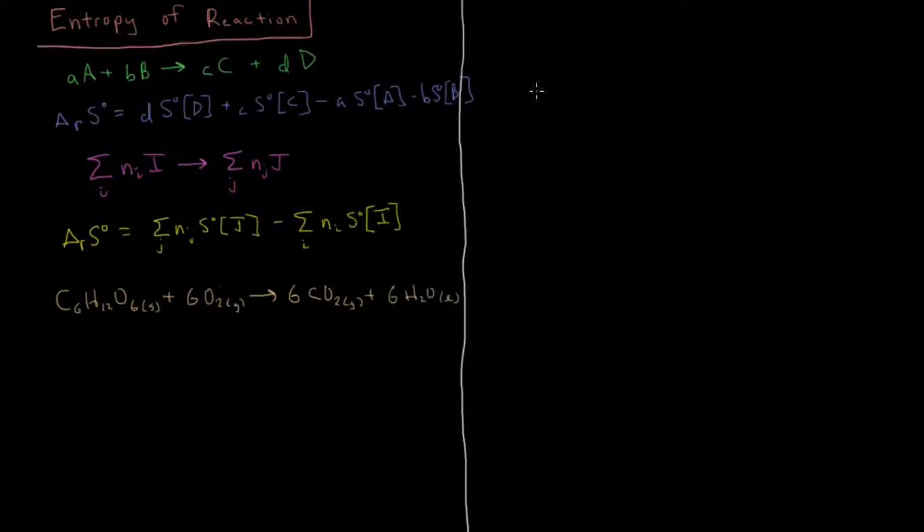So I'm going to make a table, and that table is going to have each chemical species in this reaction, and it's going to have the standard molar entropy of all of them. So we're going to start with glucose, and that is 209.2. And the unit for all of these is joules per Kelvin mole.